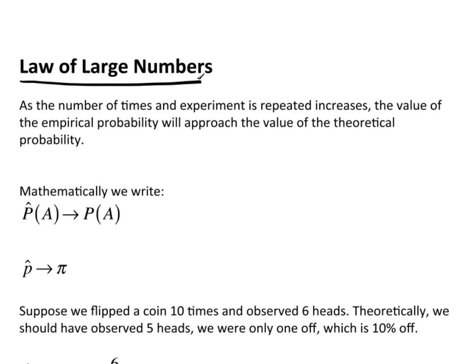The law of large numbers simply says that as the number of times an experiment is repeated increases, the value of the empirical probability will approach the value of the theoretical probability.